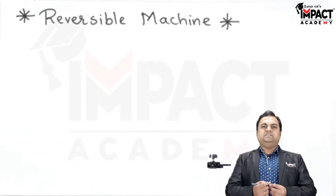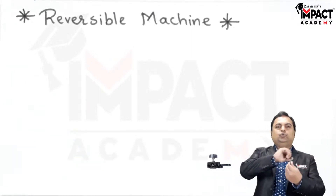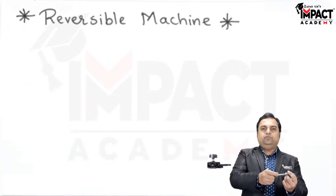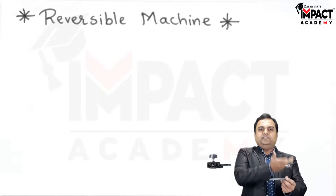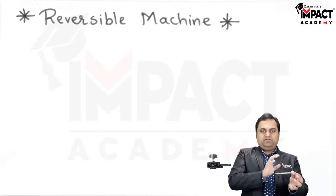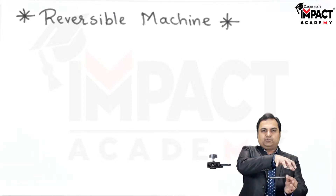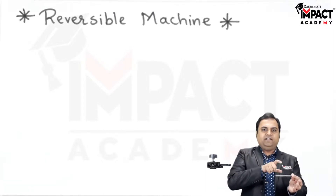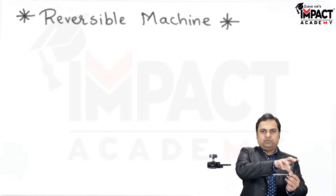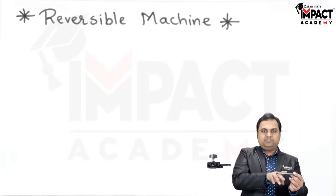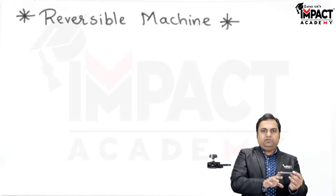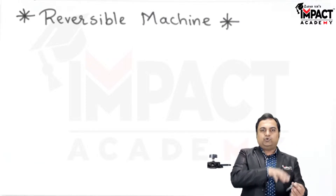For this we can take a simple example: if there is a screw jack which is used to lift a car and we are applying the effort at the handle of the screw jack and the car gets lifted, then in that case the effort was applied. But now when the car is kept on the screw jack and we are not applying any effort at the handle, because of the machine being a reversible machine, without the application of any effort the load would be lowered on its own.